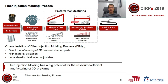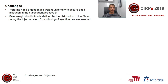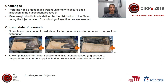To manufacture preforms in the fiber injection molding process, we have to overcome some challenges. In order to get good infiltration results in a subsequent process step, the preforms need a good mass weight uniformity. This mass weight distribution is defined by the distribution of the fibers during the injection step, so for optimization of this injection step, we need monitoring of the injection process. As of now, there is no real-time monitoring of the mold filling. What is done today during research is to interrupt the injection process, open the mold and control the fiber distribution, and then repeat this over and over again.